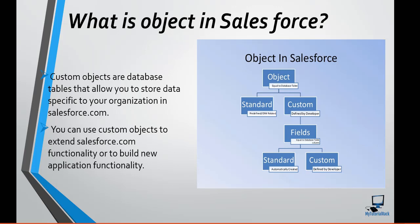There are two different types of objects: standard objects, which are already given to you by Salesforce, and custom objects, which you create based on your specific company needs. By definition, custom objects are database tables that allow you to store data specific to your organization in Salesforce. You can also use custom objects to extend Salesforce functionality or build new functionalities.